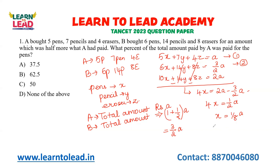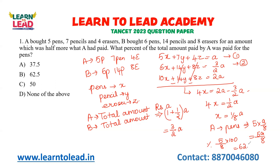Total amount spent by A for the pens is 5 × (A/8) = 5A/8. So the required percentage is 5/8 × 100 = 62.5%. 62.5% is your answer.